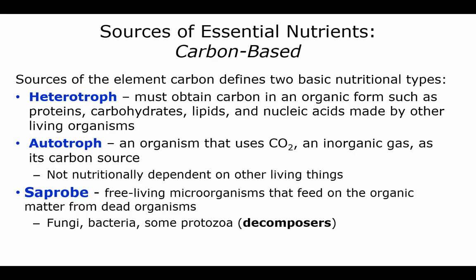Now the sources of these carbon-based essential nutrients: if they are heterotrophs — hetero is different, troph is to feed — so they must obtain their carbon from other living organisms and they get it as proteins, carbohydrates, lipids, and nucleic acids. Autotrophs are self-feeders. They use carbon dioxide as their carbon source because they're photosynthetic. They're not nutritionally dependent on any other living things.